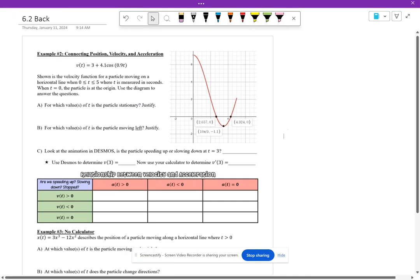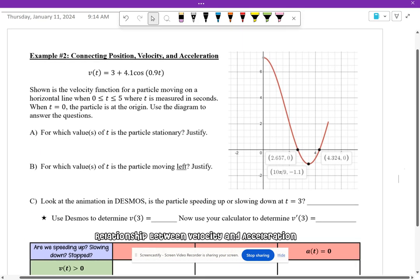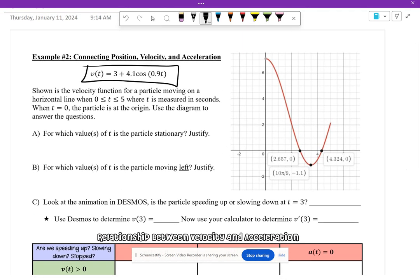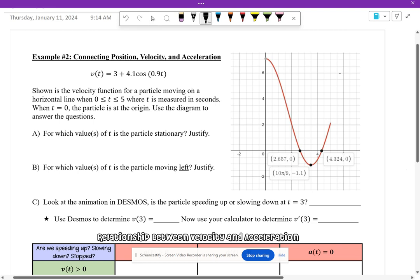So over here we were given, or we are given, a velocity function and here's the graph that goes with that function. So it's a velocity function for the particle moving on a horizontal line when 0 ≤ t ≤ 5, where t is measured in seconds.